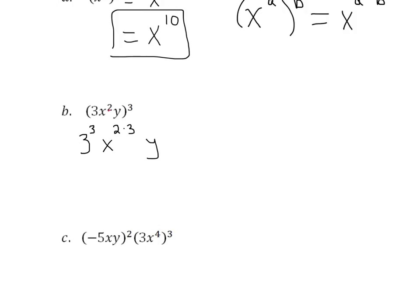And then y to the... What's the exponent above y? It's 1, right? So it's going to be y to the 1 times 3. Now we can evaluate 3 to the 3rd using our calculator. 3 times 3 times 3 is 27.